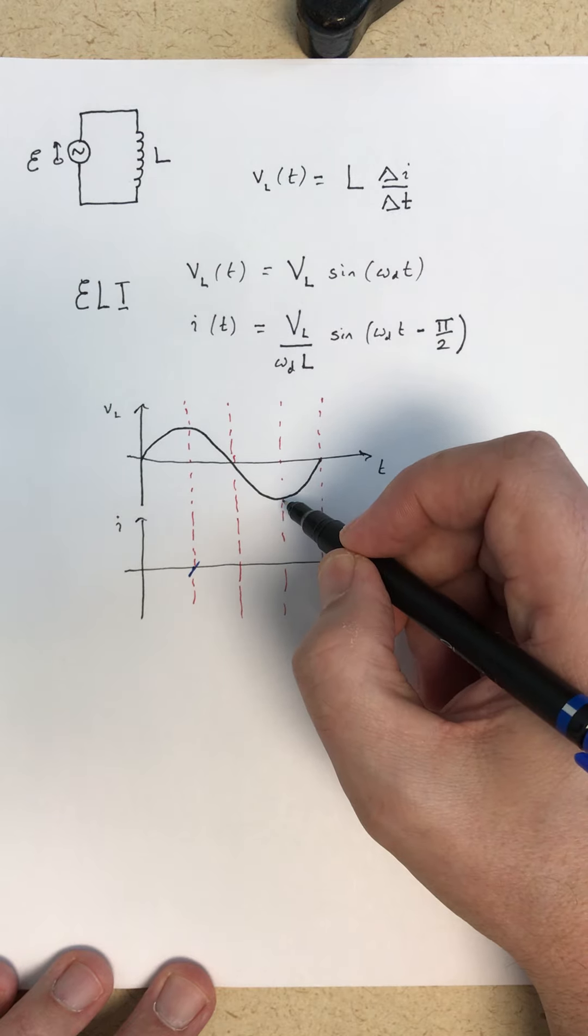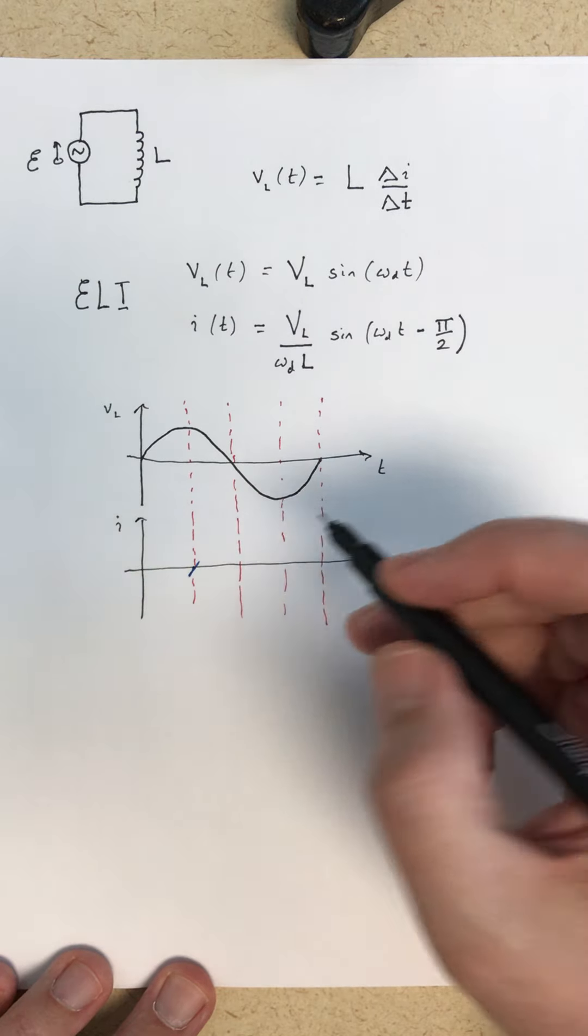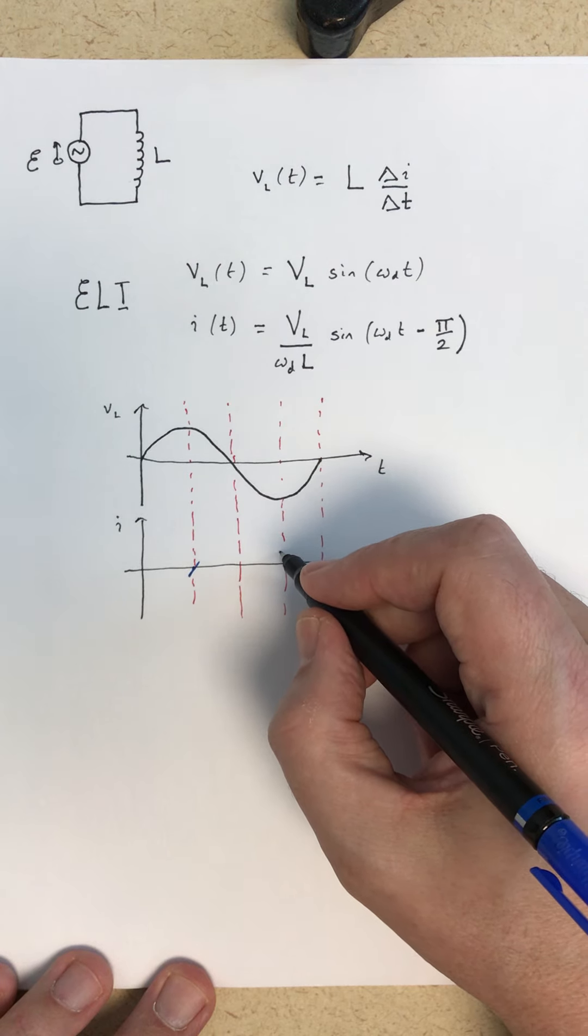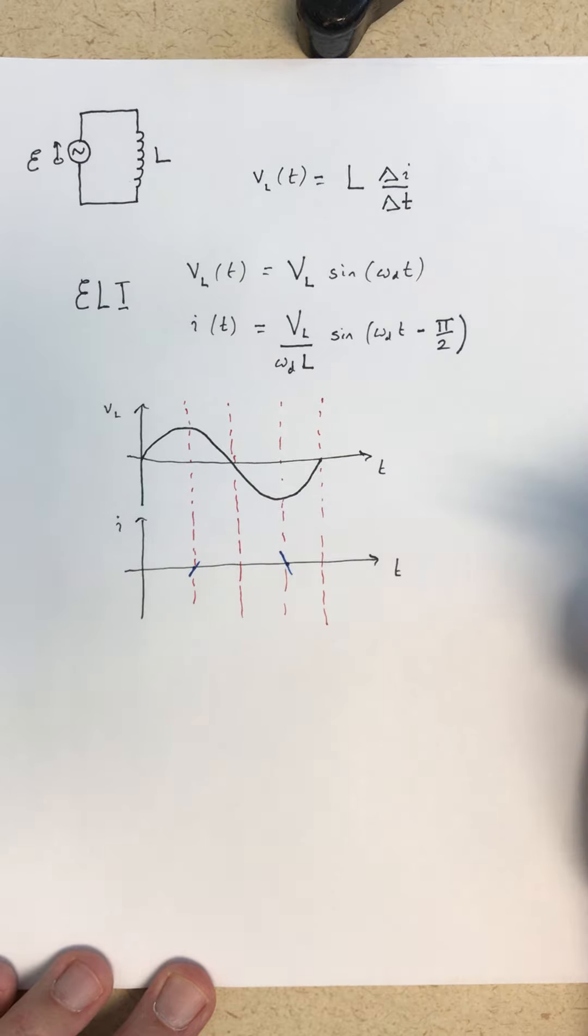This minimum value of the voltage is going to correspond to the most negative slope. So that's when the current is going through zero, with that slope.